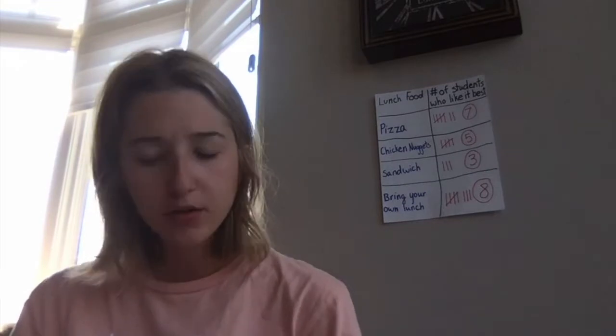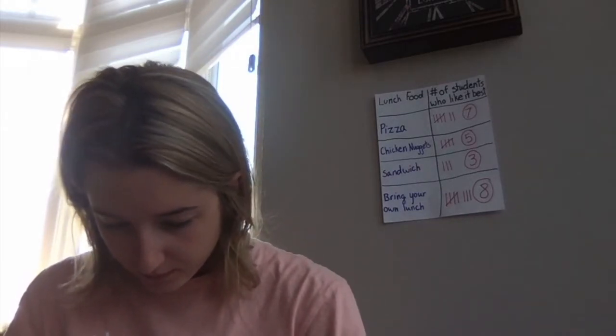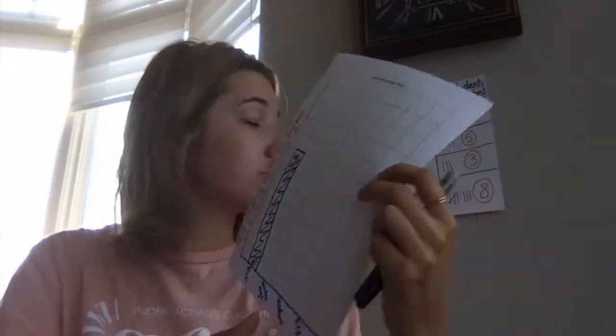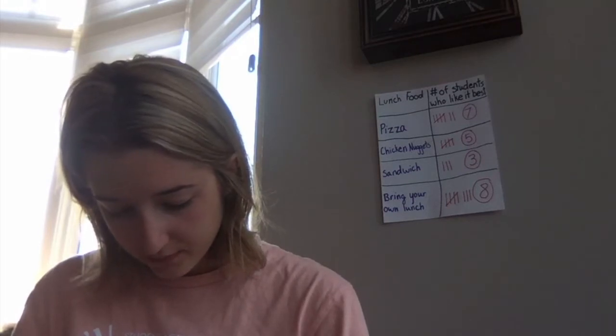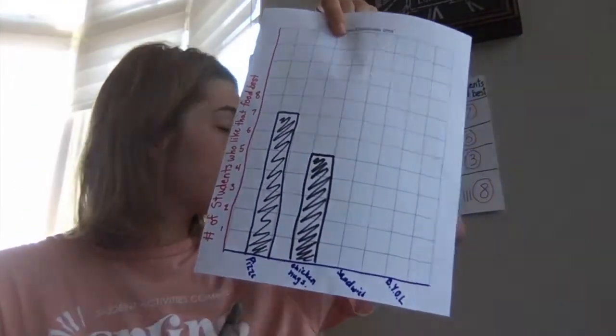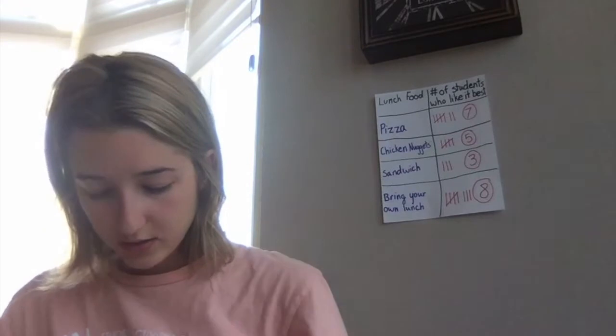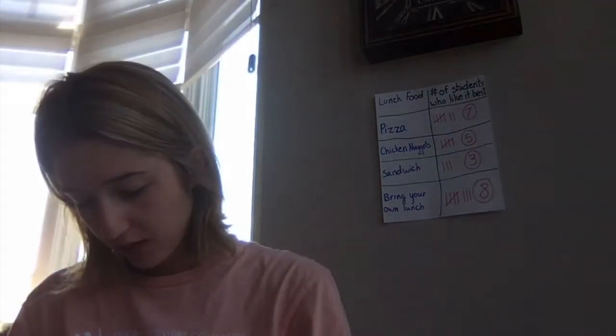Now I'm going to put all this information on the graph. Let's start with pizza — seven people liked pizza, so I'm going to draw a bar that goes all the way up to number seven. You can go ahead and do that on your graph as well. Now I'm going to chicken nuggets — five people like chicken nuggets best, so I'm going to make a bar for chicken nuggets up to five.